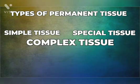Now let's move to types of permanent tissue. There are three types of permanent tissue: simple tissue, special tissue, and complex tissue. Simple tissue consists of cells that are alike in origin, form, and function.